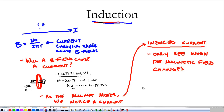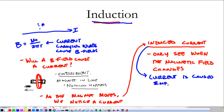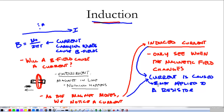So let's follow this line of logic a little bit further. If we have an induced current, we know that current is caused by a potential difference — we'll call it an EMF. So if moving a magnet causes an induced current, then moving a magnet causes an induced EMF.